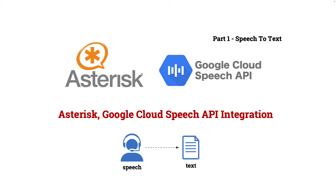Hello everyone and welcome back to my channel. Today we want to learn how to integrate our Asterisk telephony system with the Google Cloud Speech API. In part one, we will learn how to use the speech-to-text API. We will call our Asterisk system, talk into it, and it will send the audio stream to Google Cloud to convert it to text. I use a vanilla Asterisk system here, but you can use the same method for any system.